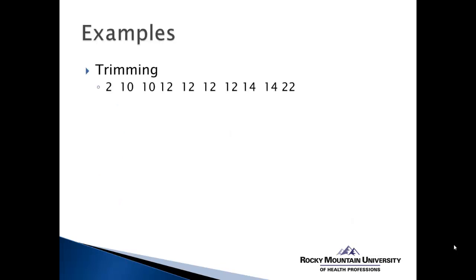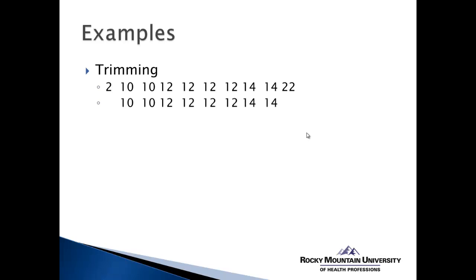Let's run through some quick simple examples. For trimming: we have data points where the majority are clustered closely together, and two data points appear to be significantly higher or lower at both ends of the distribution. We determine these are outliers and simply eliminate them — we trim them. Our distribution now has those two scores removed, resulting in a smaller sample, but we've eliminated the outliers and the distribution is more likely to be normal rather than skewed.